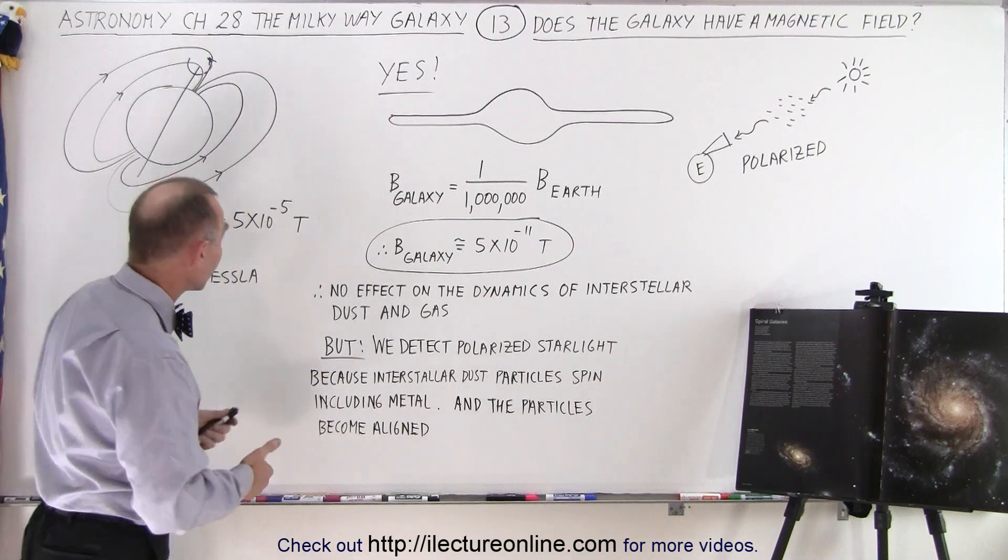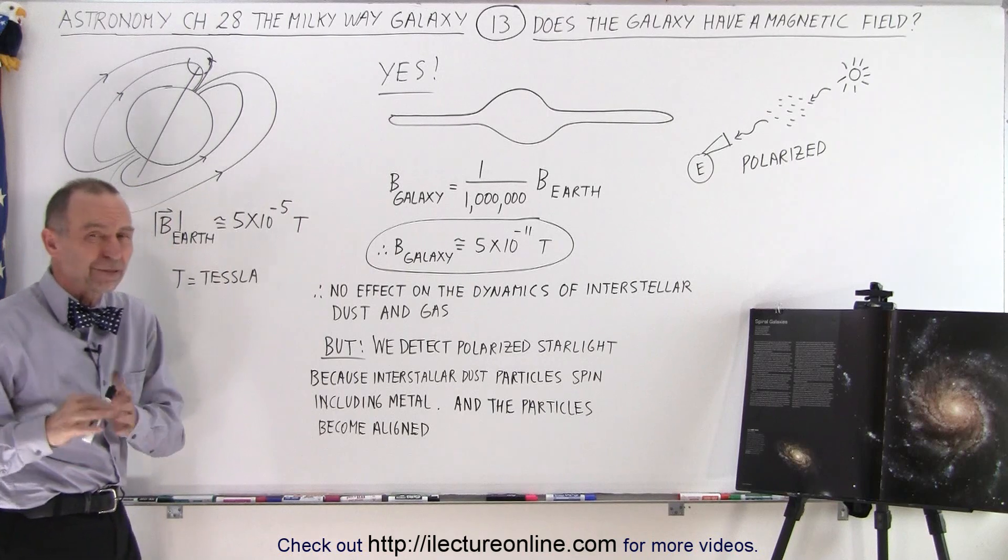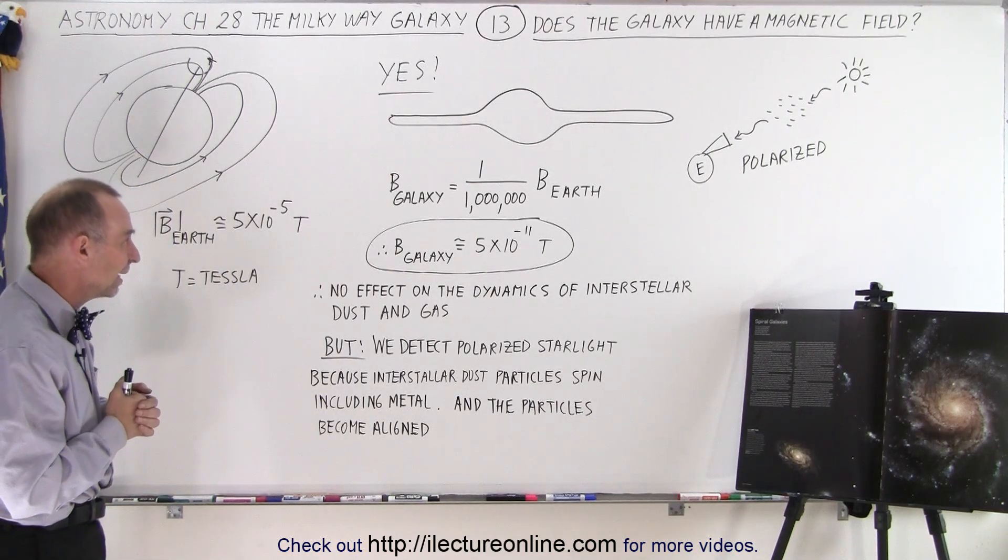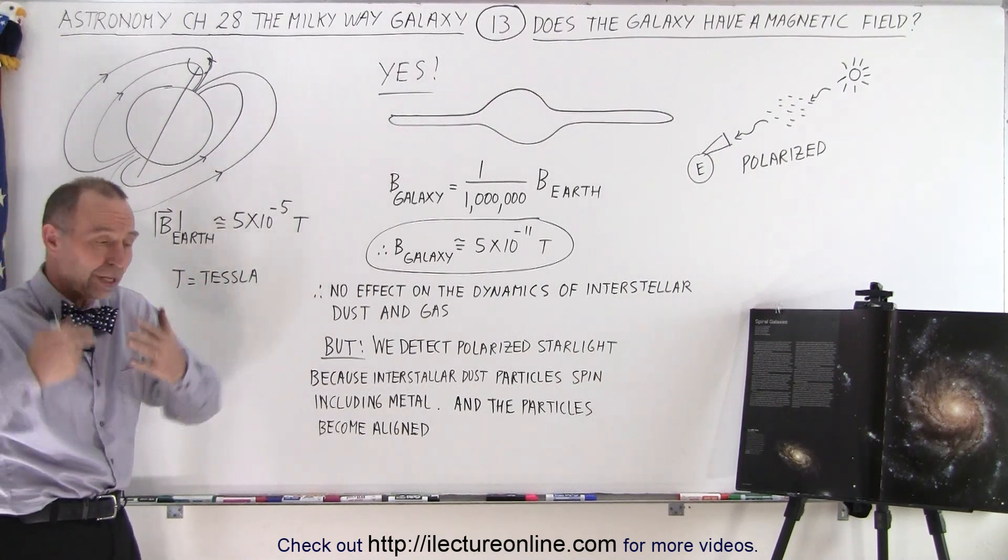And to compare it to the field of the Earth, the Earth's magnetic field is around 5 times 10 to the minus 5 teslas, about 50 micro teslas. T stands for teslas. And thus, by itself, not a bad magnetic field. It protects us against the solar winds.